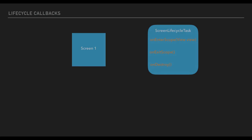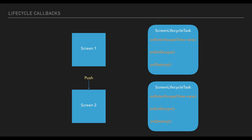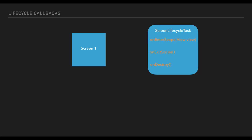The screen lifecycle task will have callbacks for when the screen is shown to the user, when it goes in the back stack or is popped, and when it is destroyed. As you see in the animation, when a new screen is pushed, the screen lifecycle task for the previous screen receives the on exit scope callback. The incoming screen's tasks receive an on enter scope callback. When a screen is popped, its task on exit scope gets called, followed by on destroy. And now the screen that was in the back stack calls on enter scope for all of its tasks since it's now the visible screen.